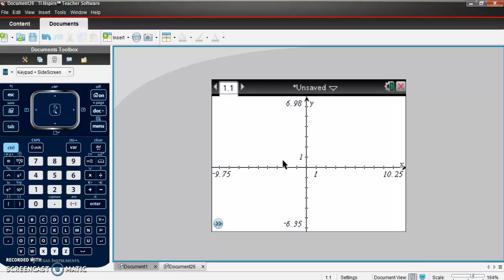So Gabby graphed h of x. There's that graph. I'm going to hit tab again. And then all of a sudden she graphed k of x. There's that one.